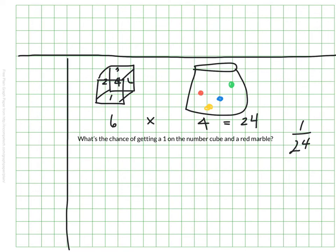We also know that the probability of rolling a one is one out of six, and the probability of getting a red is one out of four. And if we multiply those together, we get one out of 24.